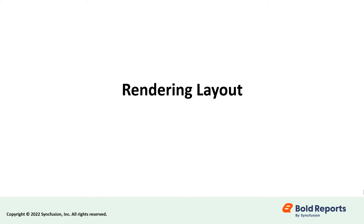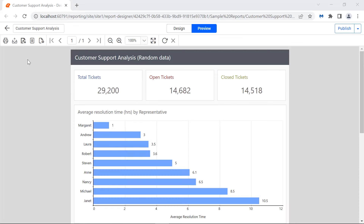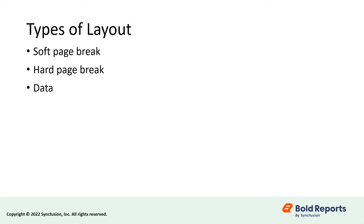Let's move on to rendering layouts. Reports can be exported to PDF, Excel, Word, PowerPoint, HTML, CSV, or XML file formats. Each file format exports reports based on three types of layouts: soft page break, hard page break, and data layout.